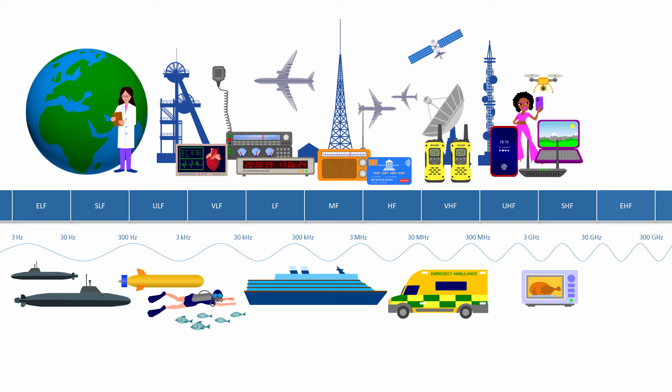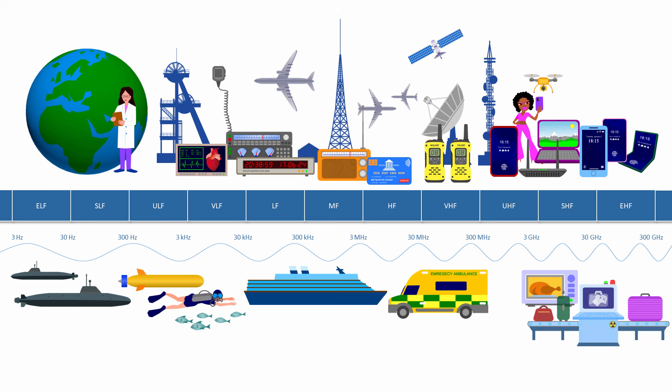Finally, there's the extremely high frequency band. At above 30 GHz, these so-called millimetre waves are used by airport security scanners, police speed traps, weapon systems and 5G mobile phone networks.